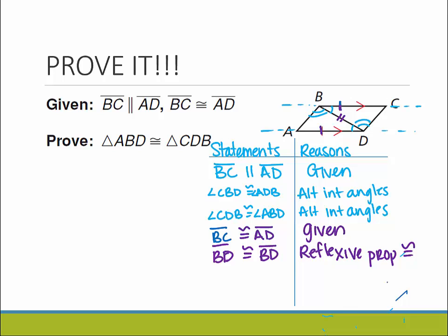I keep forgetting to write given here. So now, because of that, if you take a look at what we have going on in both triangles, we have a side, an angle, and a side. And then the same thing for the other one. We have a side that's congruent, an angle, and a side. So we can say that these triangles ABD and CDB are congruent because of the side-angle-side theorem.